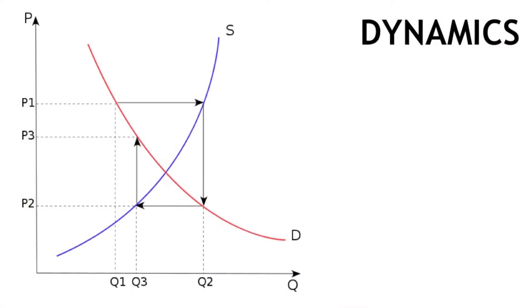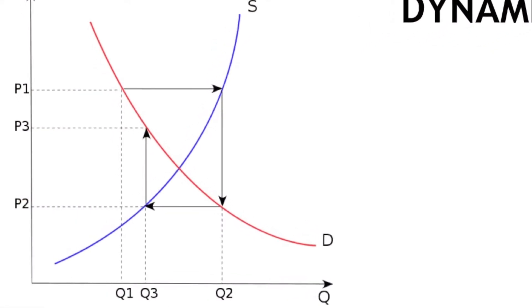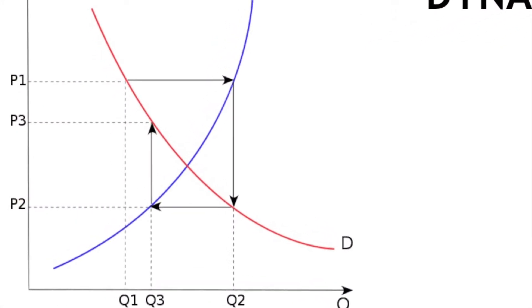The fourth and final area is around understanding dynamic process complexity — how change actually happens. Not the lovely straight line graphs that we often see in our theories of change, but actually the non-linearity of change, the fact that it's characterised by surprise and by tipping points.